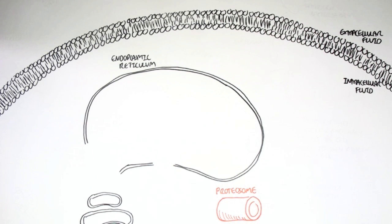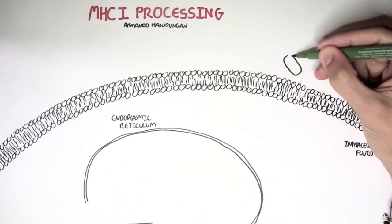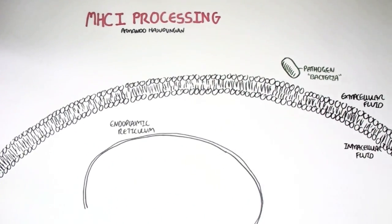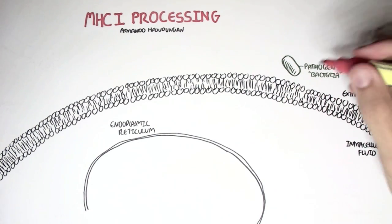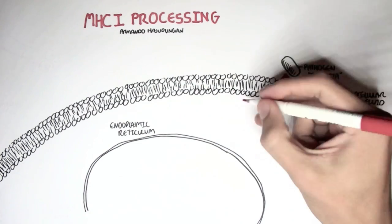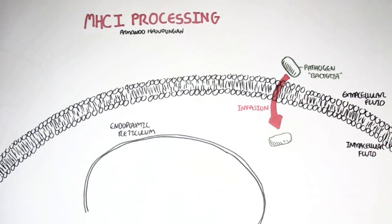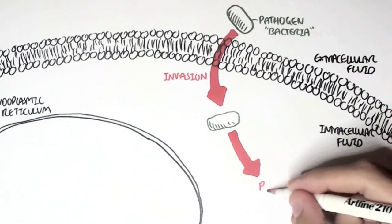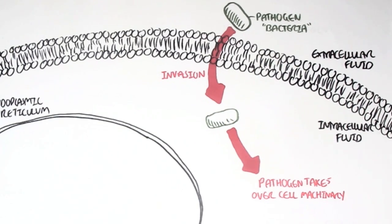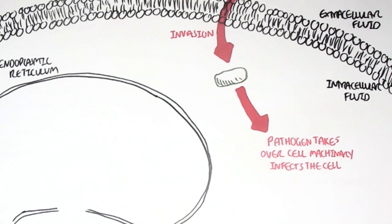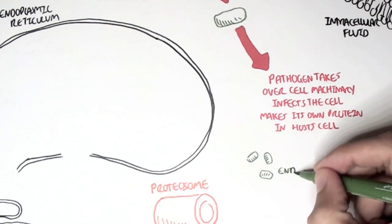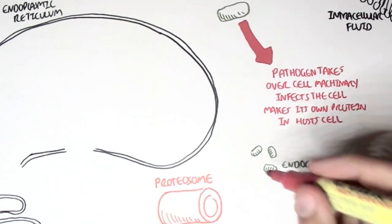So let's begin with the MHC class I processing. For example, a pathogen on the outside, it can be a bacteria in this case, will invade the cell, will infiltrate the cell. The pathogen, in this case the bacteria, can take over the cell. It can multiply within the cell. It can take over the cell machinery if it was a virus. It will essentially infect the cell. And through this process, the pathogen will make its own proteins in the cell. So here I'm drawing endogenous proteins of the bacteria.